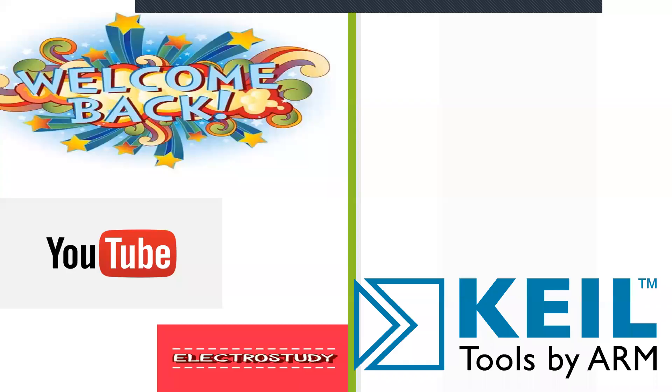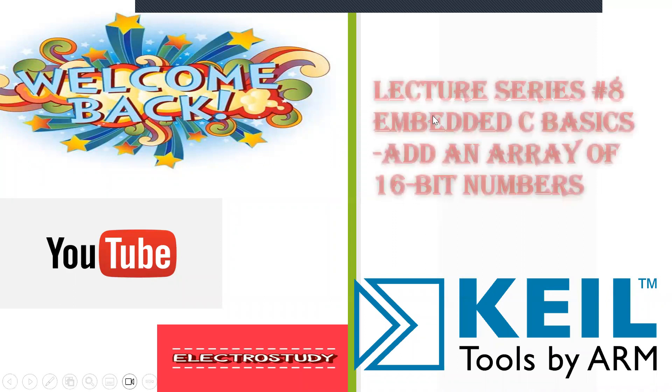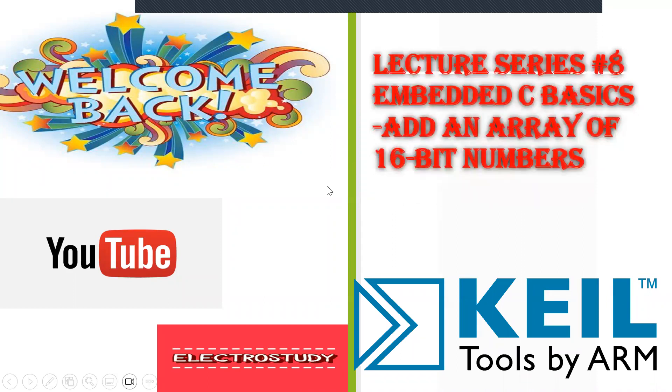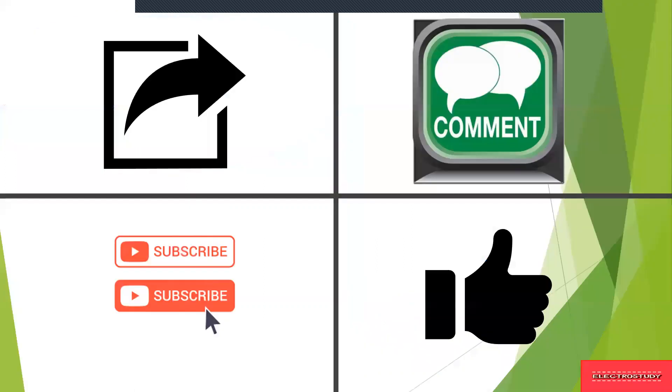Hello everyone, welcome back to our channel. This is lecture series 8 dealing with Embedded C basics. We'll be seeing about adding an array of 16-bit numbers. After adding an array of 16-bit numbers, we are going to store the value in a 32-bit register.